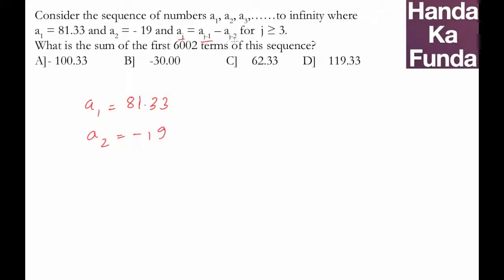That means a3 will be -19 minus 81.33 or -100.33, which is the difference of a2 minus a1. a4 will be the difference of a3 and a2, or a3 minus a2.